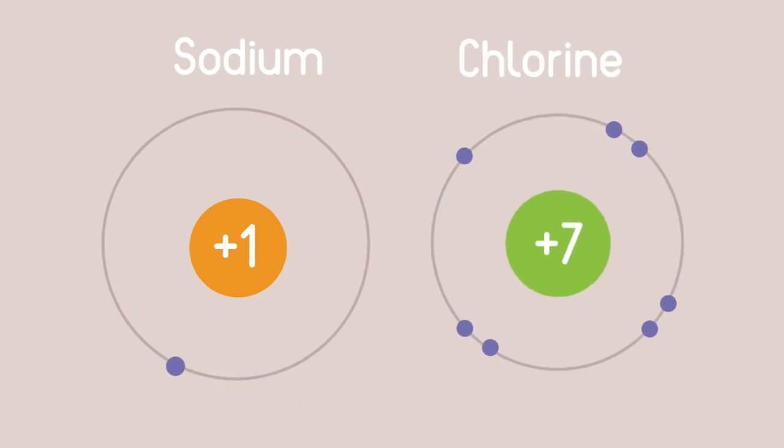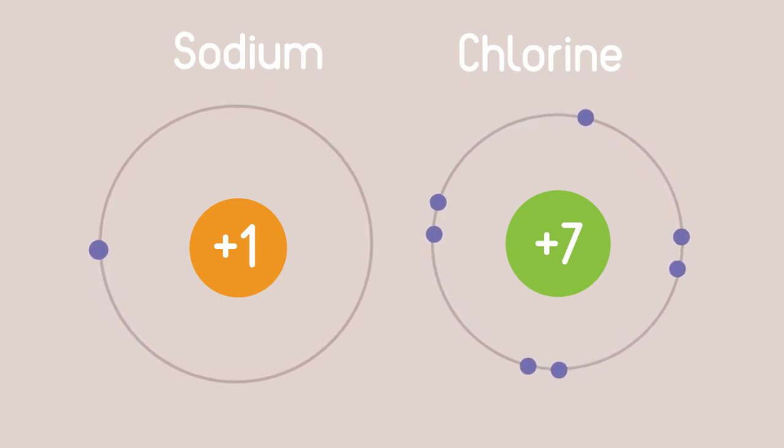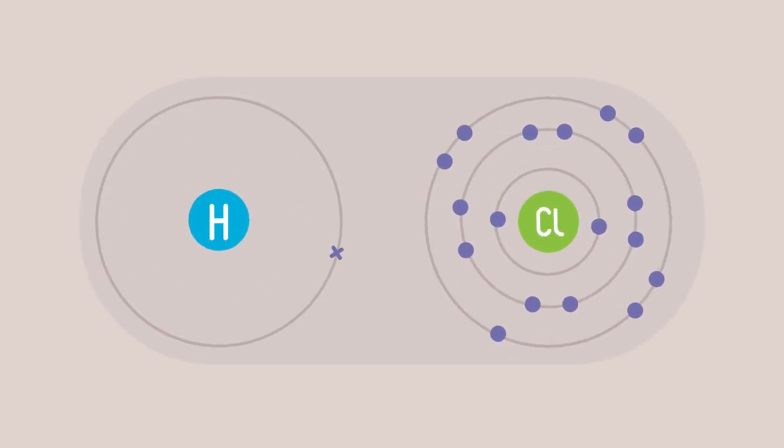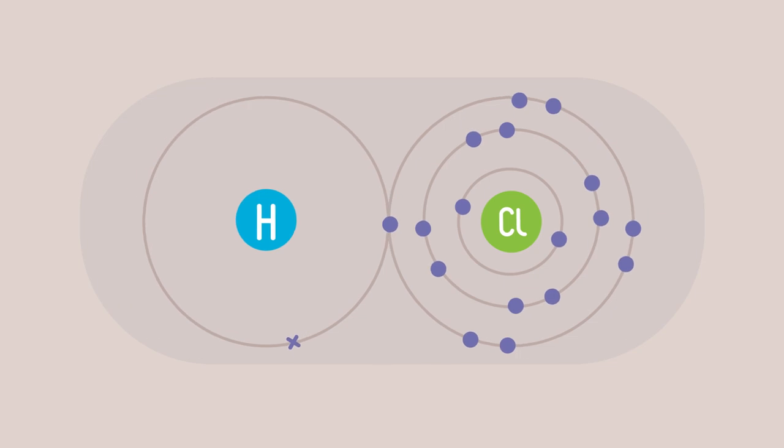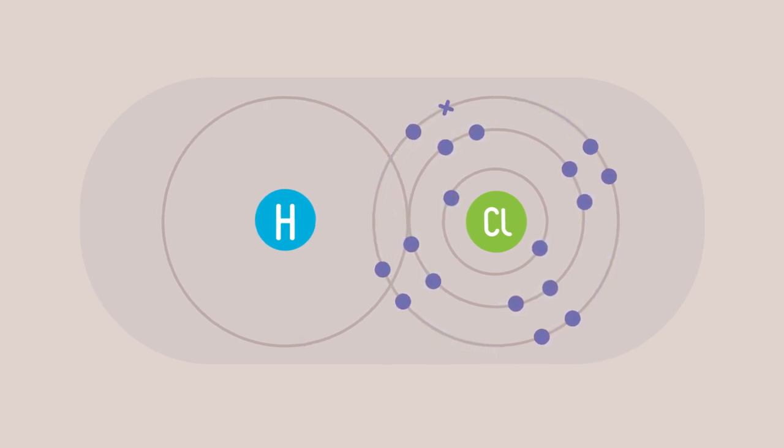We also see why atoms bond if there is a space in their outer shells. Electrons from other atoms can be attracted in by this effective nuclear charge, but only until the shell is full.